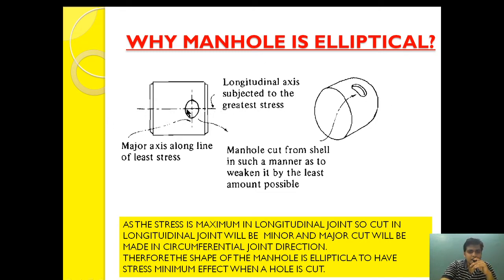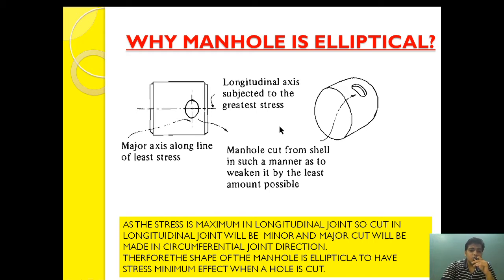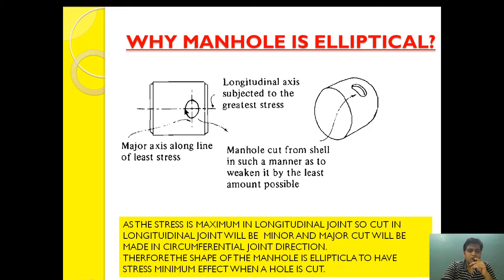Why is the manhole door elliptical? As you can see, this is the longitudinal joint and this is the circumferential joint. The manhole door is cut elliptical because, as I told you in my earlier video, the longitudinal stress is twice as compared to the circumferential stress. If the stress acting on the circumferential joint is 4 Newtons, it will be 8 Newtons in the longitudinal joint.